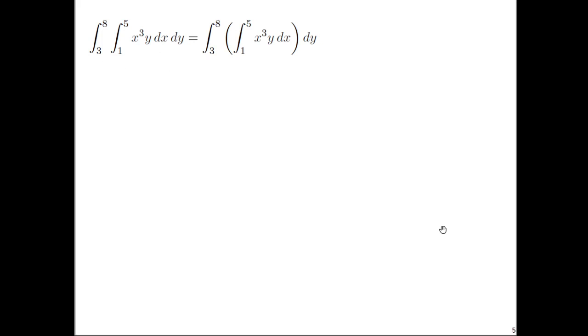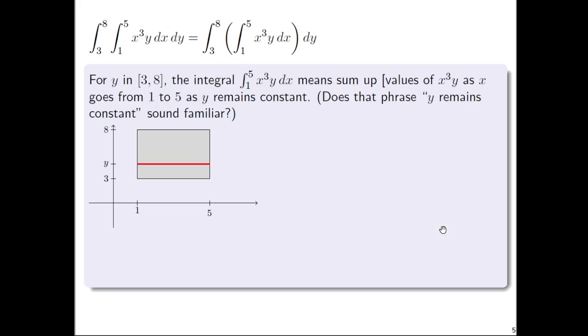We've already seen things like this where we should focus on what's on the inside. Here we integrate using x as the variable. Instead of digging into the exact computation, I want to talk through what we should be thinking about. For this inner integral inside the parentheses, for a fixed y value—a typical y somewhere between 3 and 8—y is constant. We're integrating yx³ for x going from 1 to 5, which means sum up values of x³y as x remains constant.